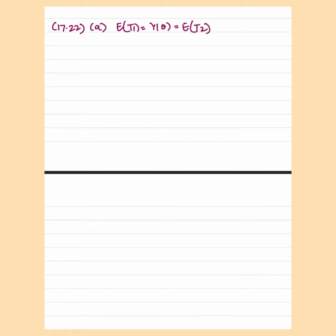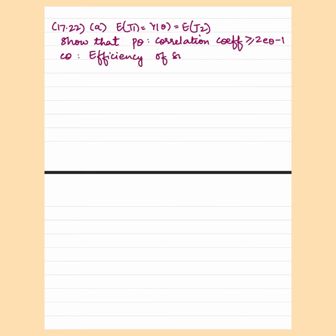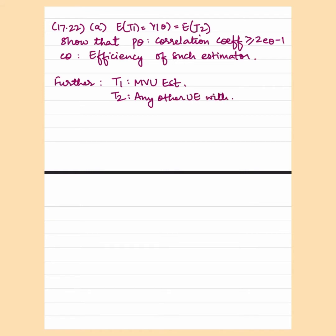We are given T1 and T2 as two unbiased estimators of gamma theta having the same variance. We have to show that the correlation coefficient P theta has to be greater than 2E theta minus 1, where E theta is the efficiency. Also, if T1 is minimum variance unbiased estimator and T2 is any other unbiased estimator with efficiency E, then variance of T1 minus T2 equals variance of T1 times 1 upon E minus 1.